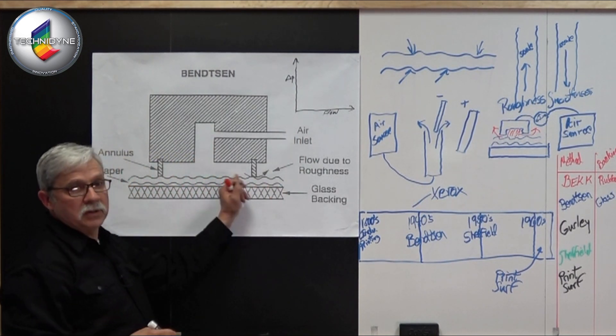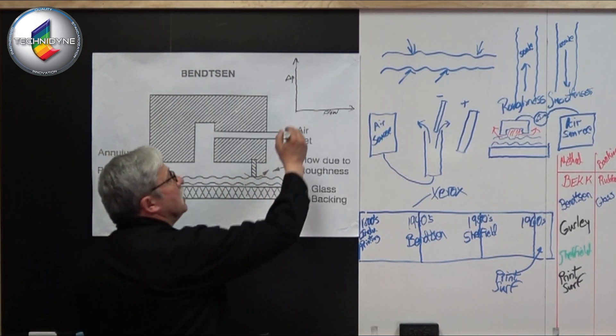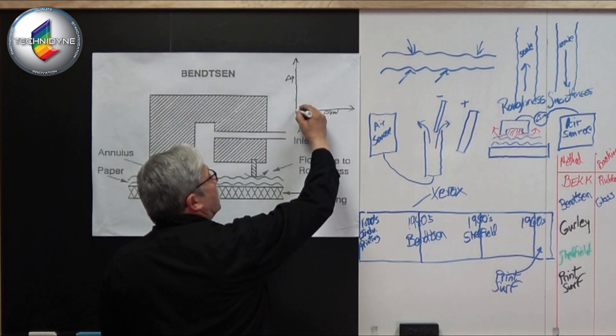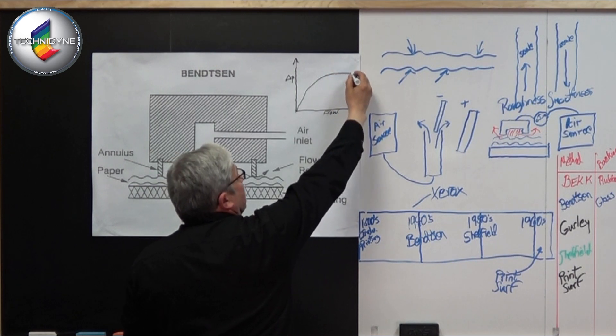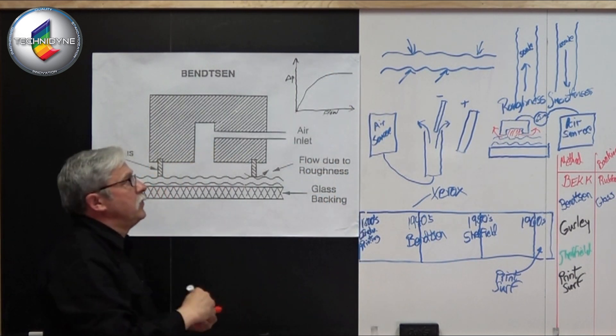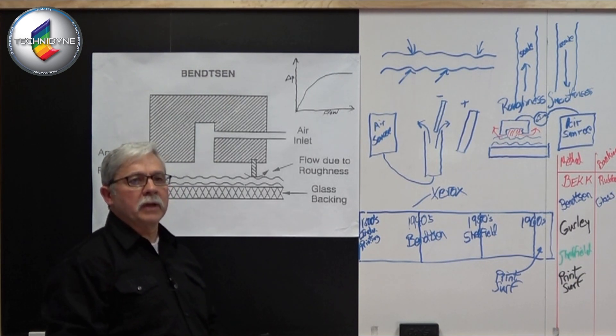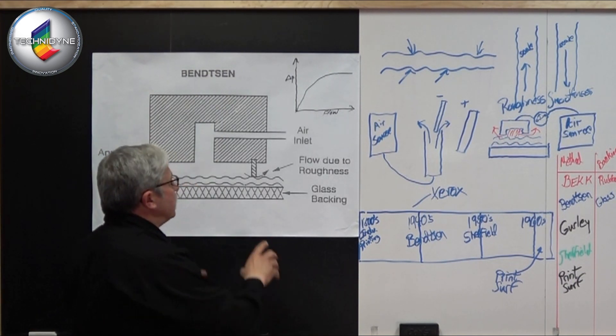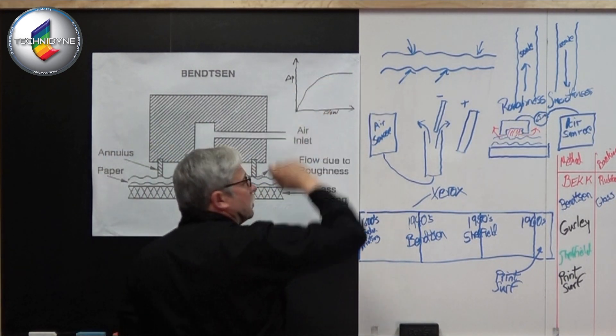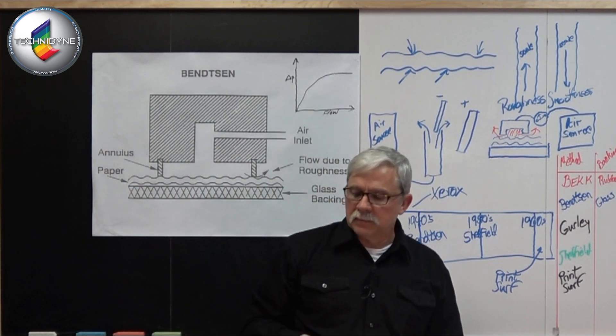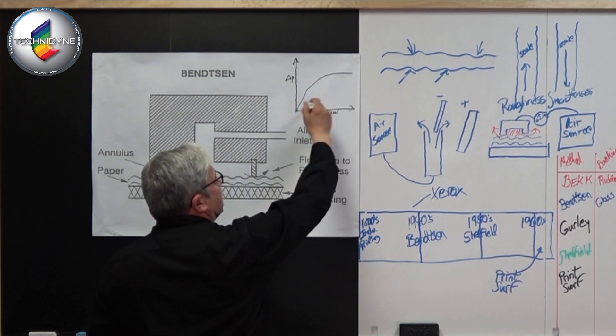As I place my samples underneath this mechanism and I have a significant amount of airflow, I'm going to get some type of curve. Because I don't have an infinite source of air, eventually I'm going to get to the point where so much airflow is going across here, I almost start to lose any resolution in my measurement system.